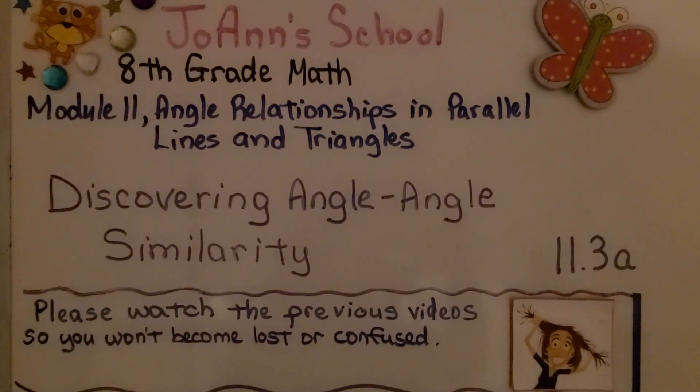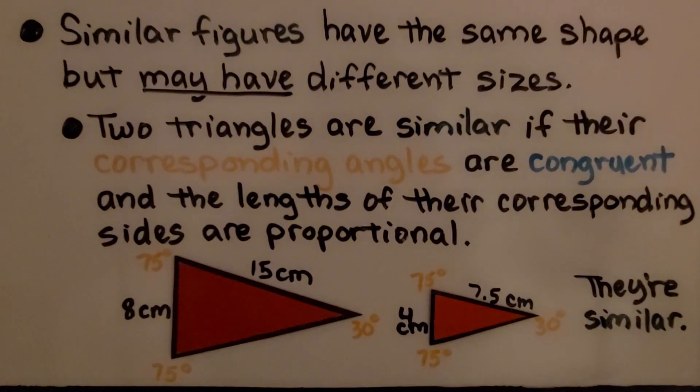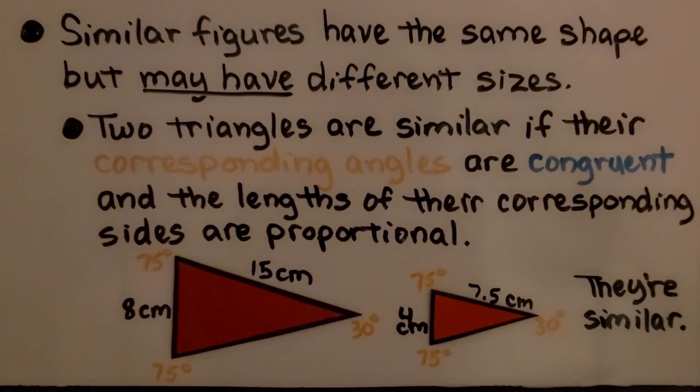Lesson 11.3a: Discovering Angle-Angle Similarity. Similar figures have the same shape but may have different sizes. Two triangles are similar if their corresponding angles are congruent and the lengths of their corresponding sides are proportional.